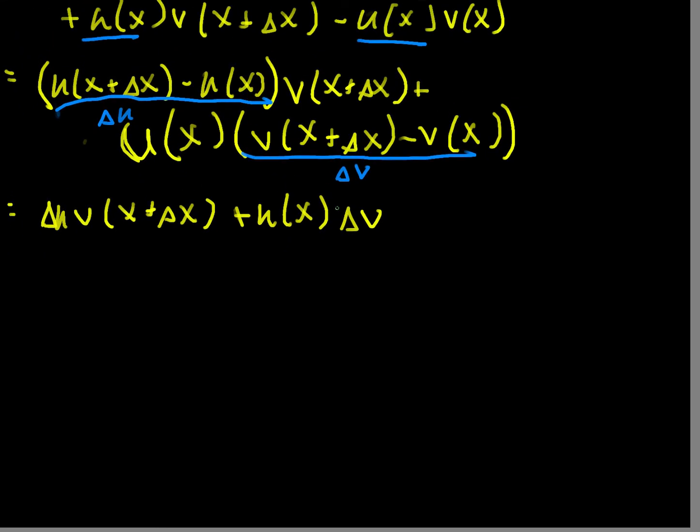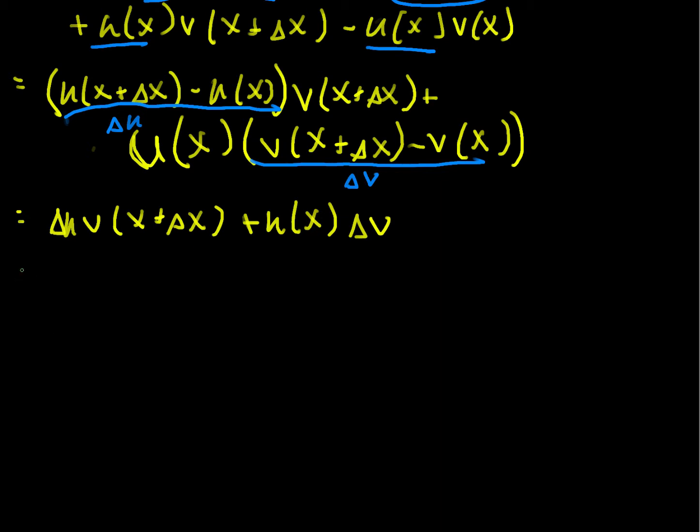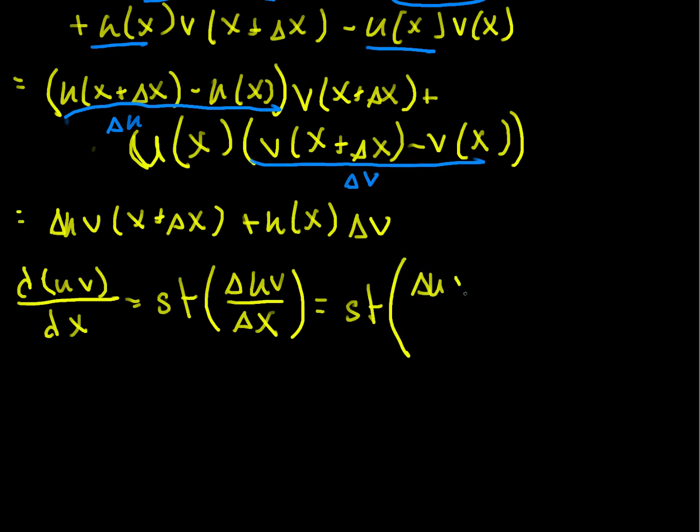And now I can compute the standard part. So the derivative of uv, their product with respect to x, is the standard part of the change in uv divided by delta x. So it's using this representation as the standard part of delta u v of x plus delta x plus u of x delta v, all over delta x.